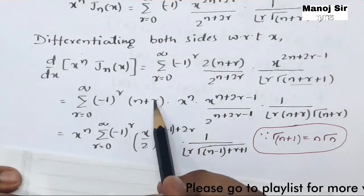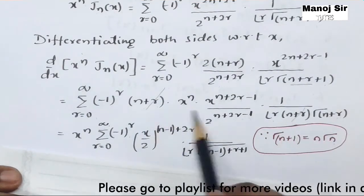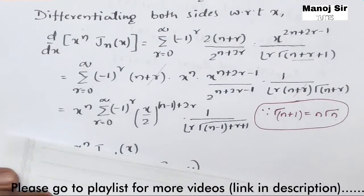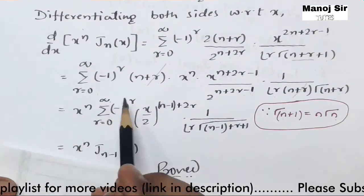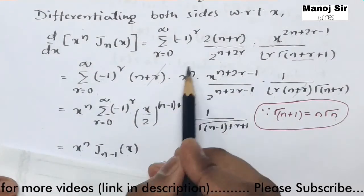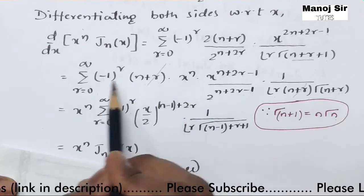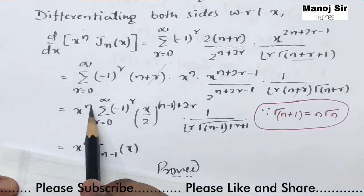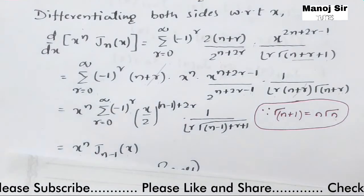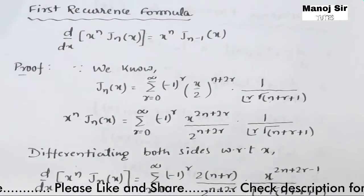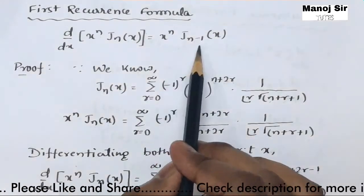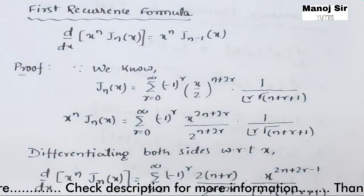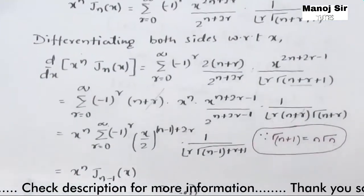We take x^n outside of the summation. In the proof we need to arrive at x^n times J_{n-1}(x), so we are working toward identifying that pattern inside the summation.